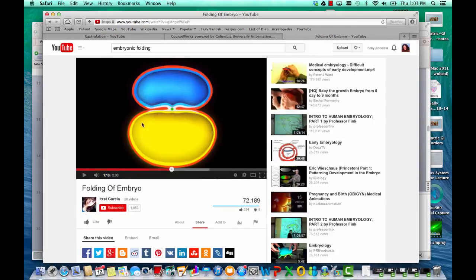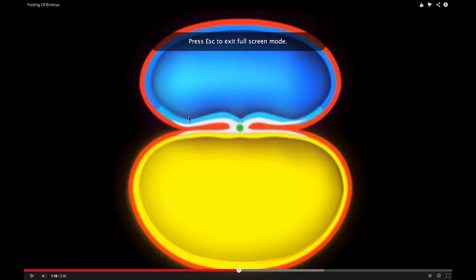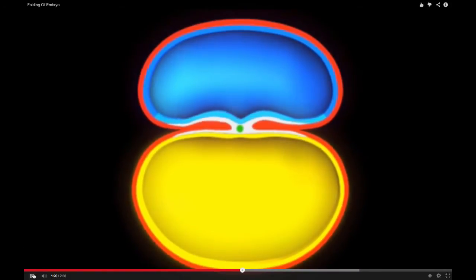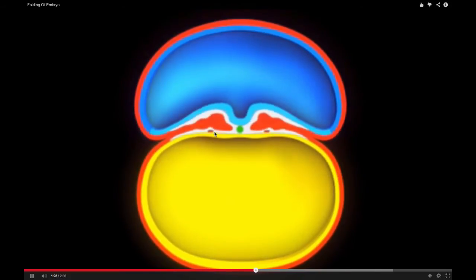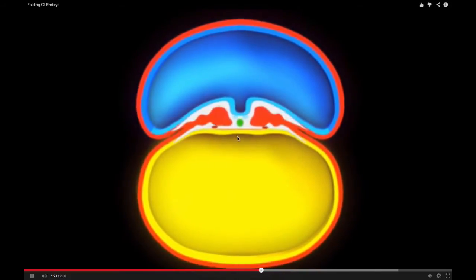Over here we've got our trilaminar disc. We've got the bottom of the embryo here, the extra-embryonic tissue below the disc, and the amniotic cavity above the disc. It's just this portion at the center that's actually the embryo.